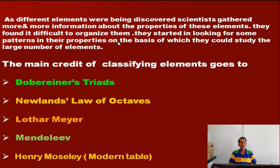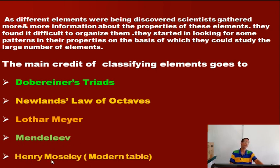Different scientists were involved in the classification of elements. They are Dobereiner, Newlands, Lothar Meyer, Mendeleev, and Henry Moseley. They have given different periodic laws for the arrangement of elements.